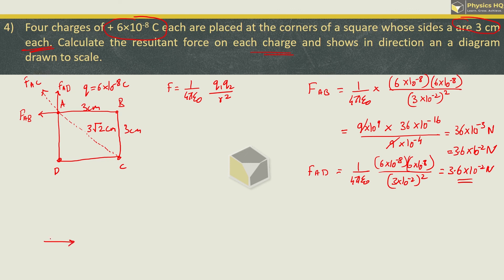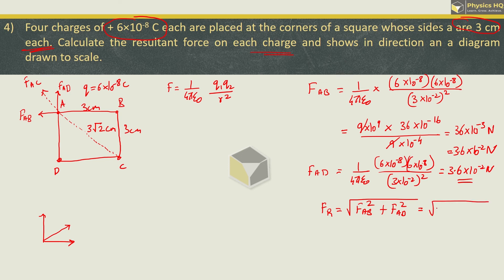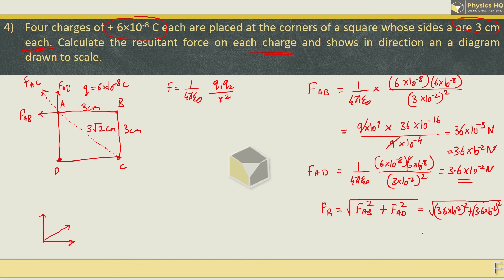These two forces F_AB and F_AD are perpendicular to each other. So we can find the resultant: under root of F_AB² plus F_AD², which is √((3.6×10⁻²)² + (3.6×10⁻²)²). Since the magnitudes are the same, this equals √2 times 3.6×10⁻² Newton.